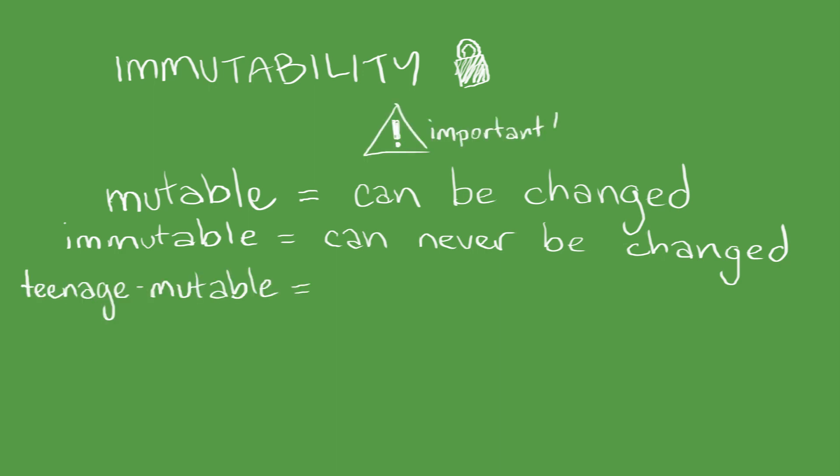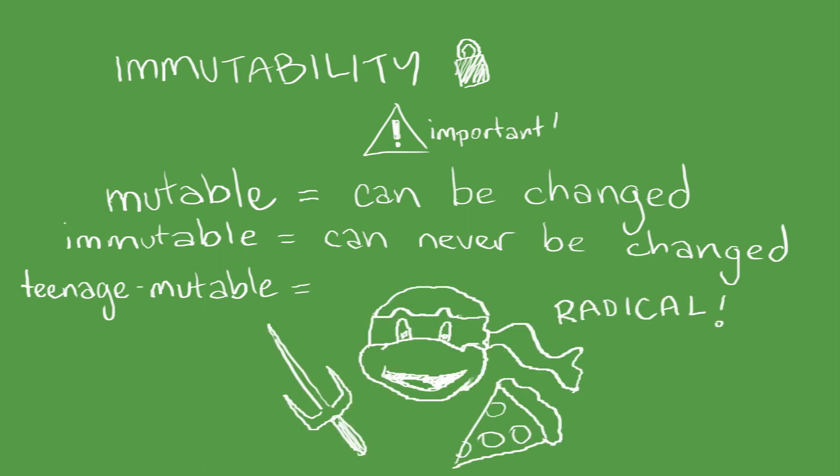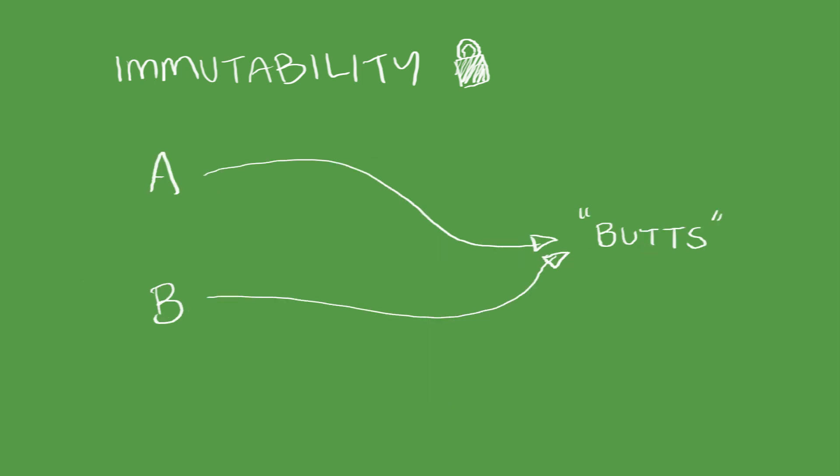Variables that are teenage mutable might live in sewers, eat pizza, and fight ninjas. A necessary property of string interning is that strings that we point to must never change. If A and B both point to buts, and B wants a different string, to append lol for example, a new entry must be created.